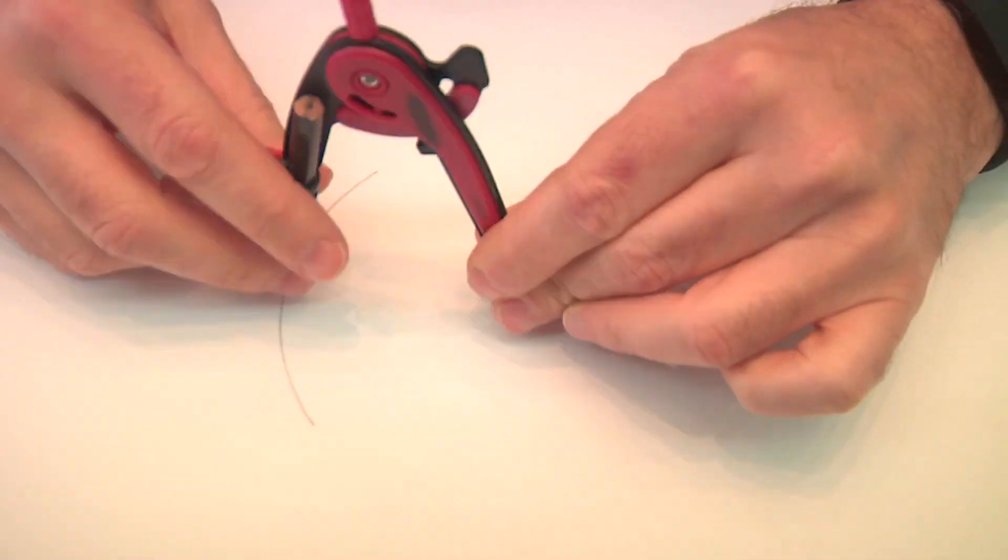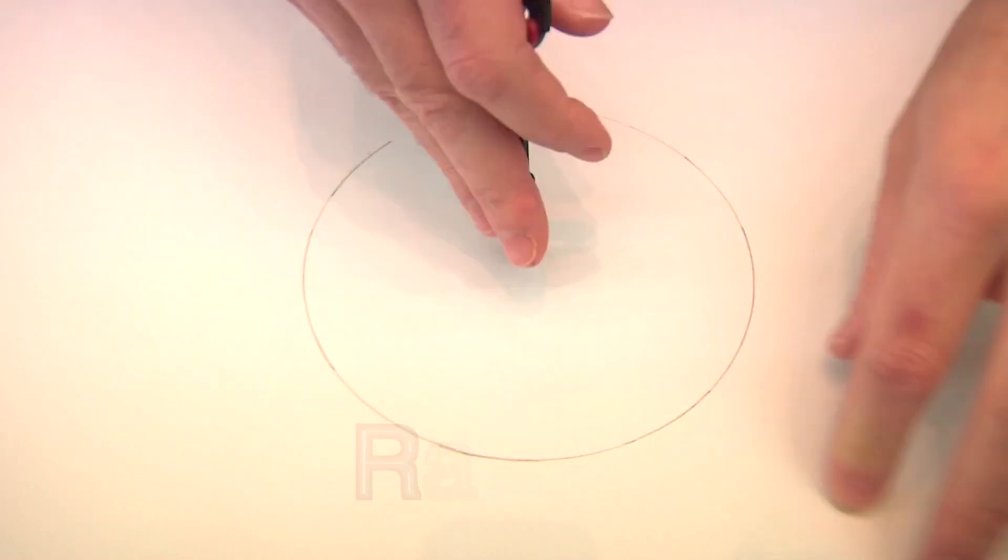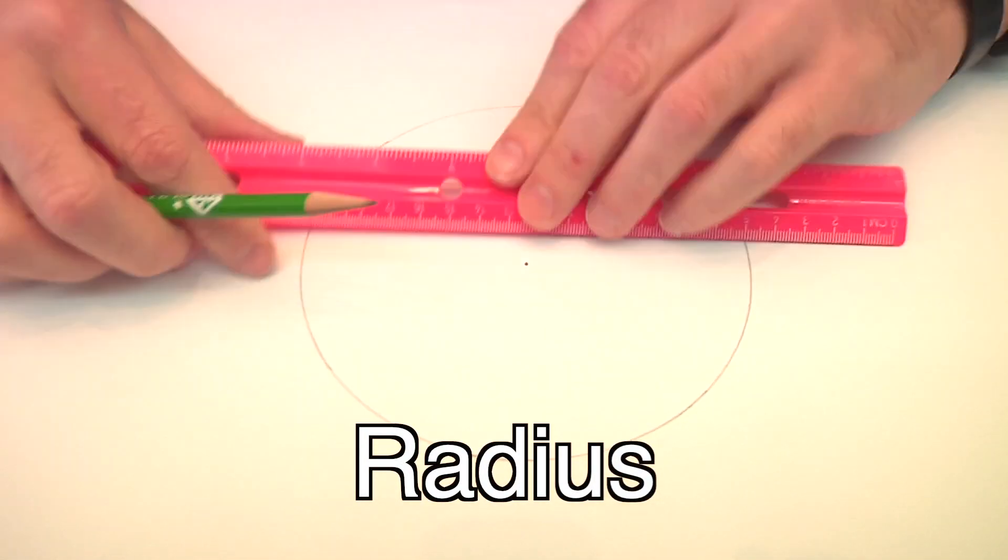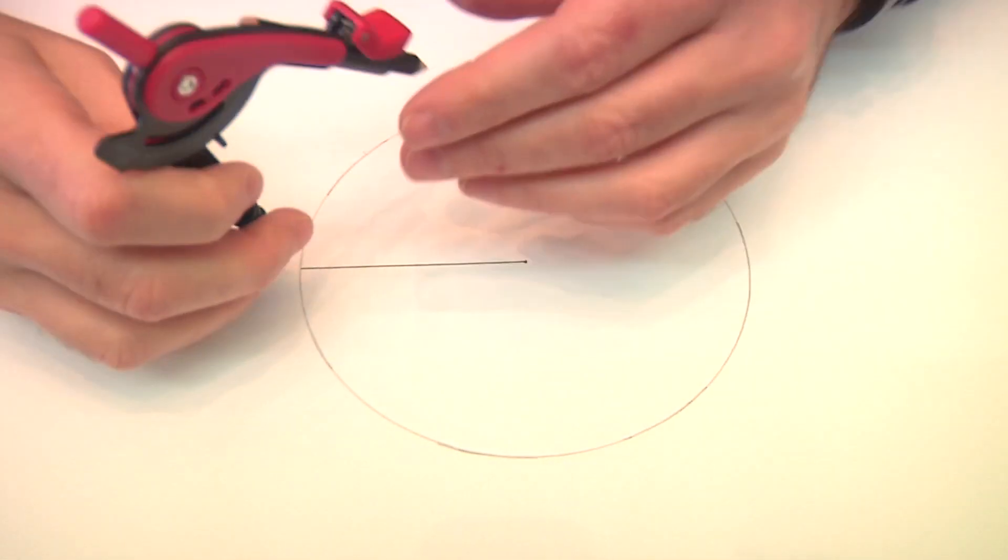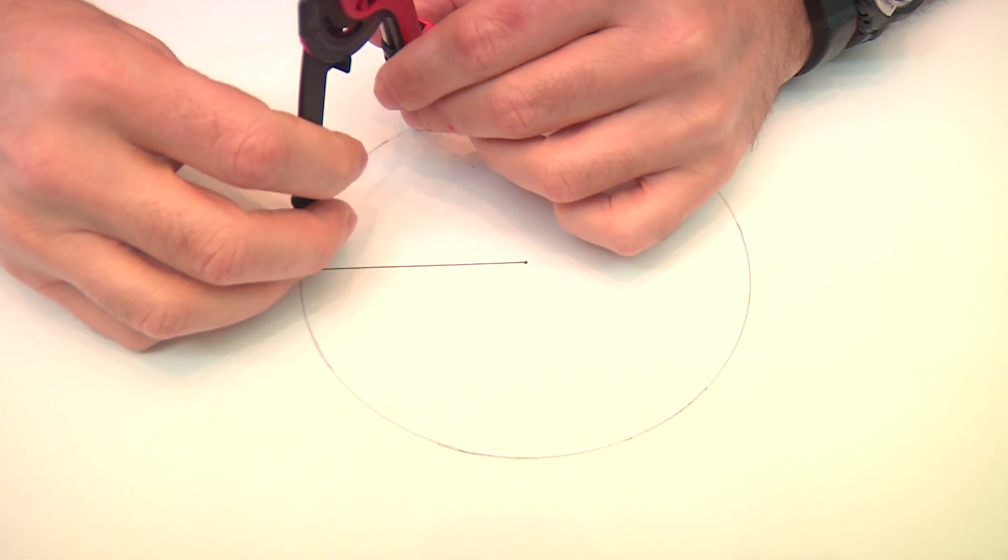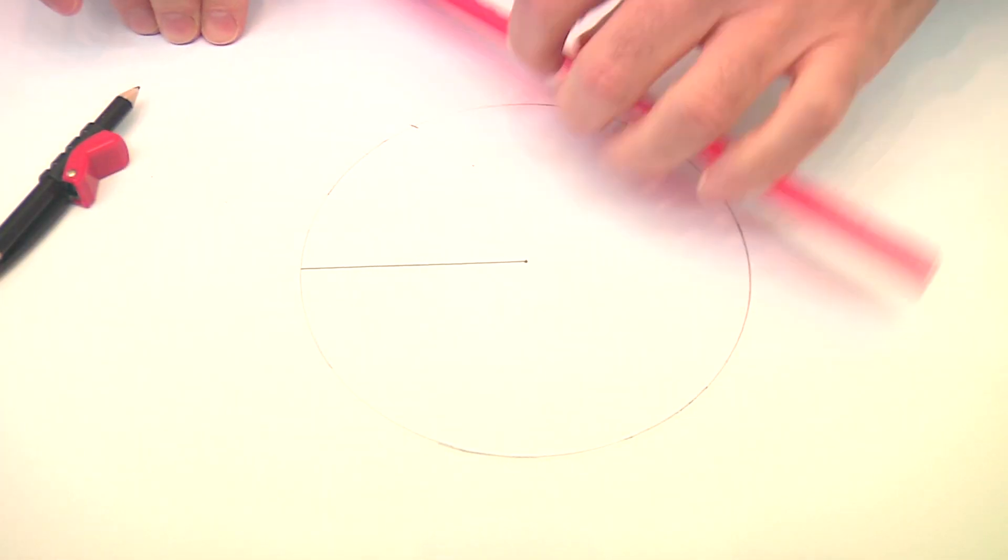So why does this work? Well, it goes back to our equilateral triangle. When you draw your circle, your compass is set to the radius of the circle, the distance from the center of the circle to the outside. And the radius is the same length wherever you go around the circle. When you make your mark on the circle, you create another line the same length as the radius.